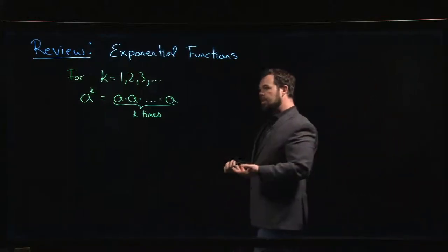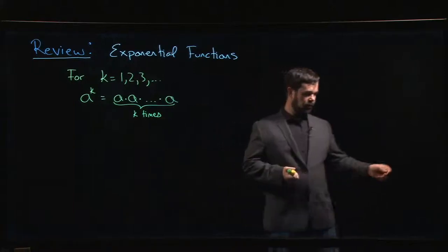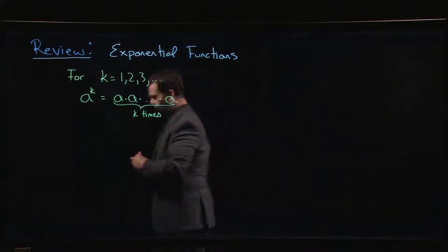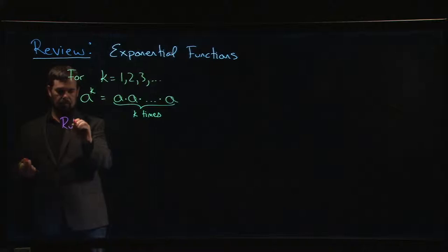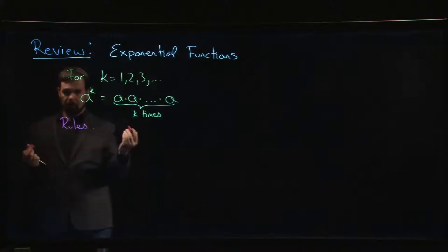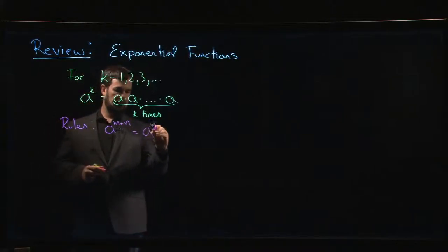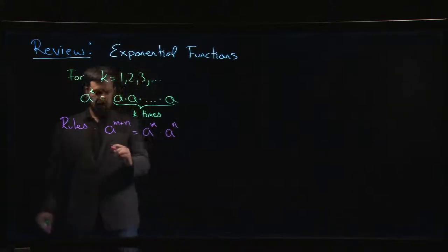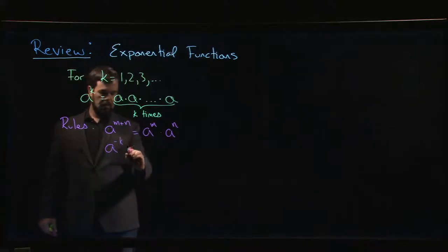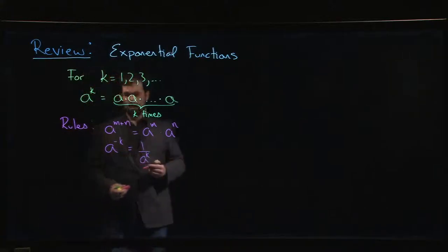Eventually you want to generalize to cases where maybe k is an integer, so we allow for exponent zero and negative exponents, and then move on to rational exponents as well. We have rules: for example, a to the m plus n is the same thing as a to the m times a to the n, and a to the minus k is the same thing as 1 over a to the k.